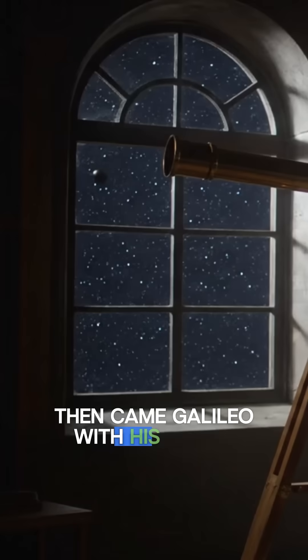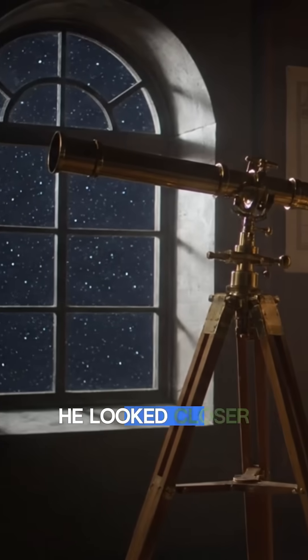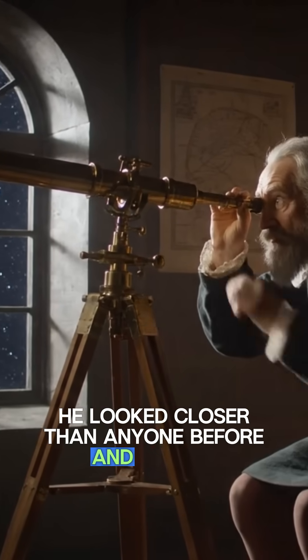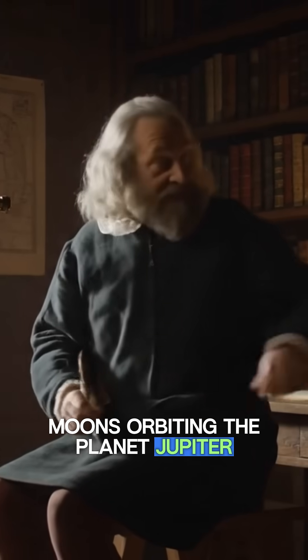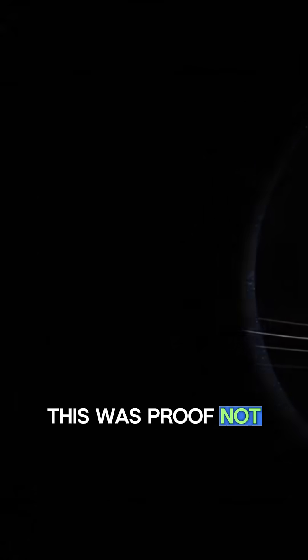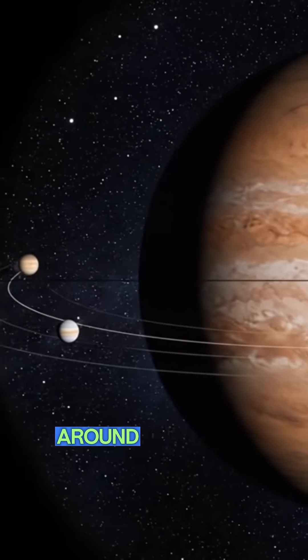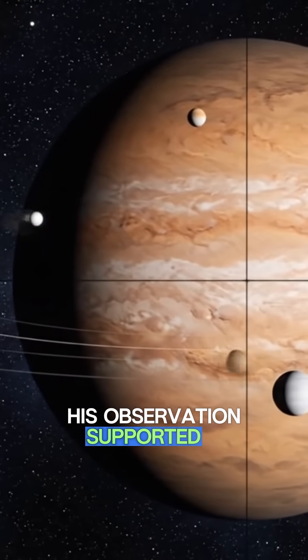Then came Galileo with his newly improved telescope. He looked closer than anyone before and saw something impossible: moons orbiting the planet Jupiter. This was proof not everything in the heavens revolved around the Earth. His observation supported a dangerous idea.